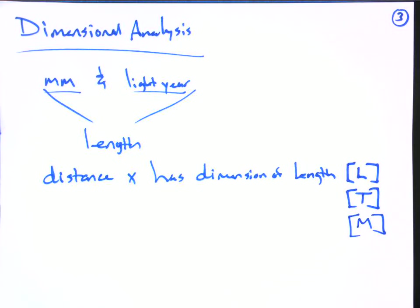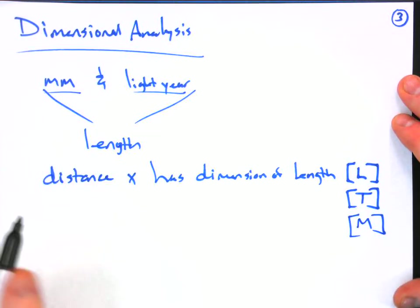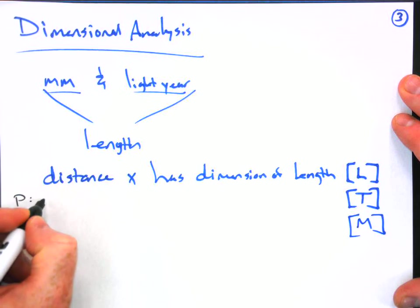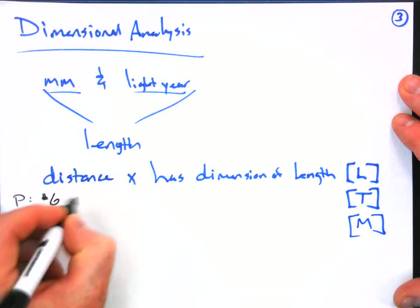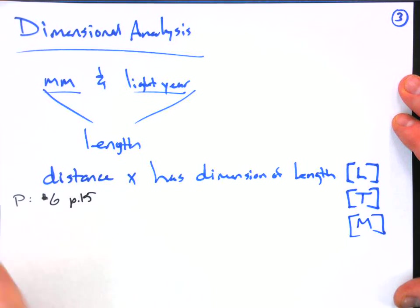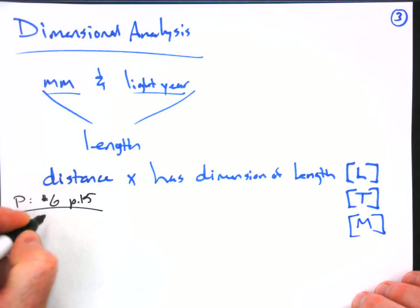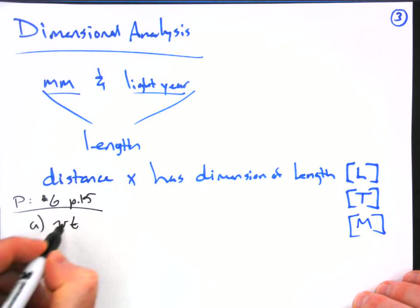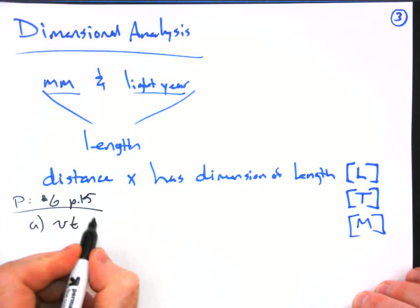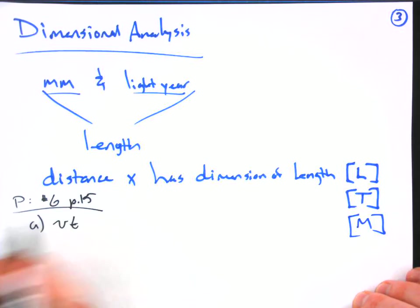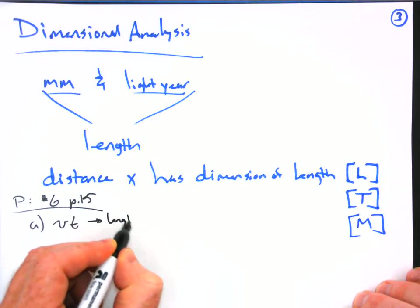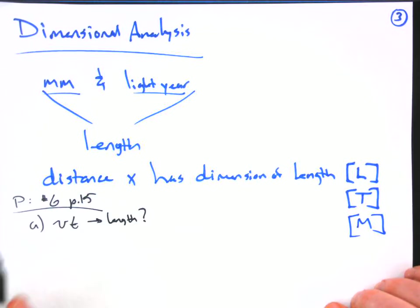An example, I'll let you know that it comes from the textbook. This is actually problem number six on page 15. So in that question, they're looking for whether various things like velocity times time have the same dimensions as distance or length. So that's kind of what we're asked. And that's part A.